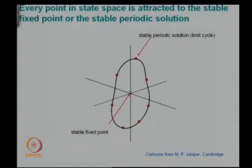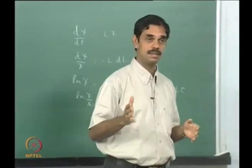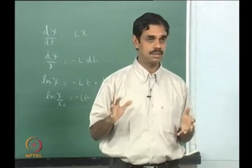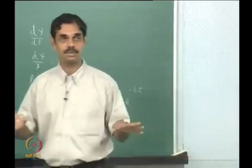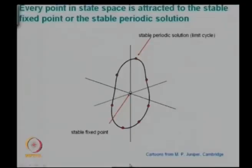Just want to show one last thing. We construct our phase space — you can use all the vectors, or there are techniques with Takens' embedding theorem where from time series data you can construct the phase space. In this phase space, this is our stable fixed point and this is the stable periodic solution, also called the limit cycle. The issue is which is the easiest way — or the smallest energy — that will take you to the limit cycle.